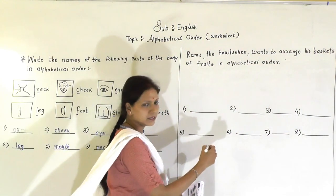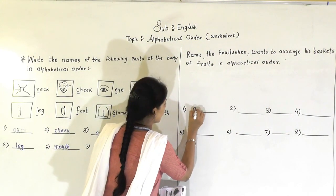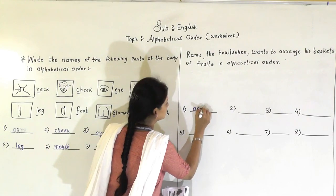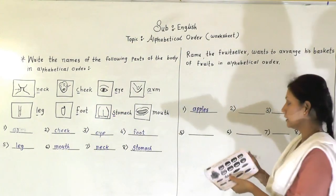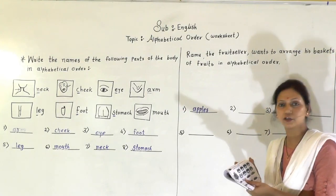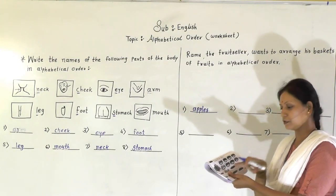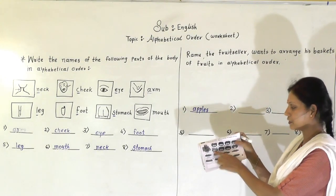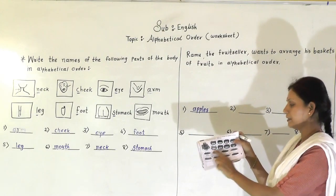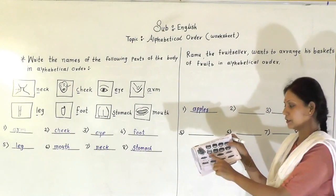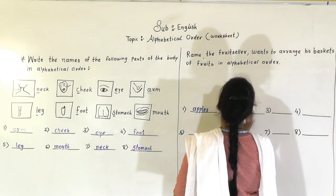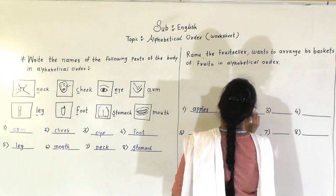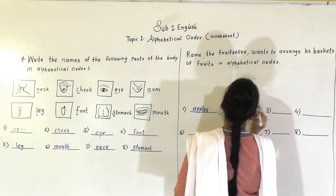So first example already it is given here. So according to the alphabetical order A come first. So apple you have to write here. Done. So next is according to the alphabet B. So where is the B? You just check your worksheet and find the B letter. So I got the banana. So here you write down B-A-N-A-N-A. Bananas.